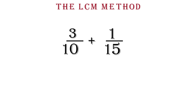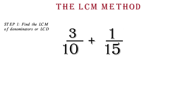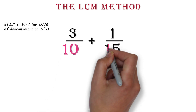The LCM method. Let's use an example to explain it: find 3 over 10 plus 1 over 15. Step 1: find the LCM of the denominators, also called the LCD. Your first step in the LCM method is to find the LCM of the denominators. The LCM of the denominators is what is called LCD, meaning lowest common denominator. So we will find the LCM of 10 and 15.